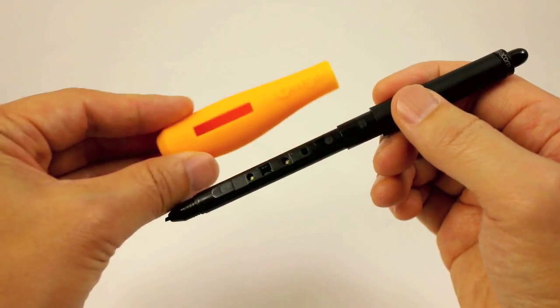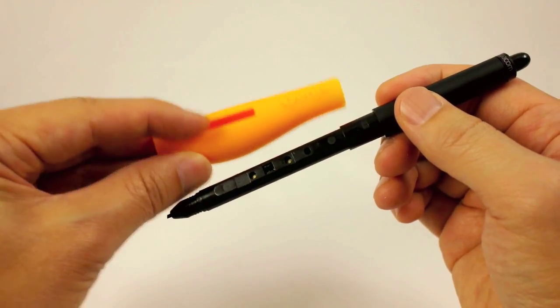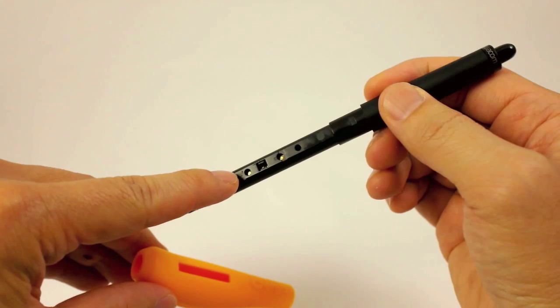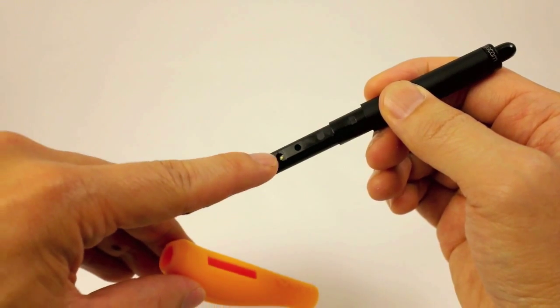To assemble the Plus Ergo grip, align the top of the grip with the top of the pen. The top of the pen is signified by two holes for the button.